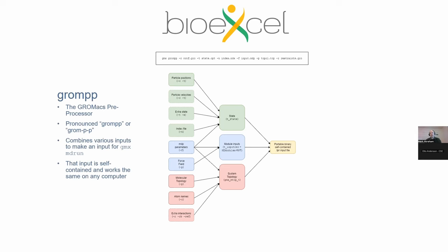It can be very tedious using other packages where you have to compile into the software how you want your simulation inputs to look — you have to build a different version of the code if you want to run a different simulation system. With GROMACS, we can leave all the fancy details about how to install GROMACS for best performance in the hands of the HPC site experts, and you can just worry about your science.